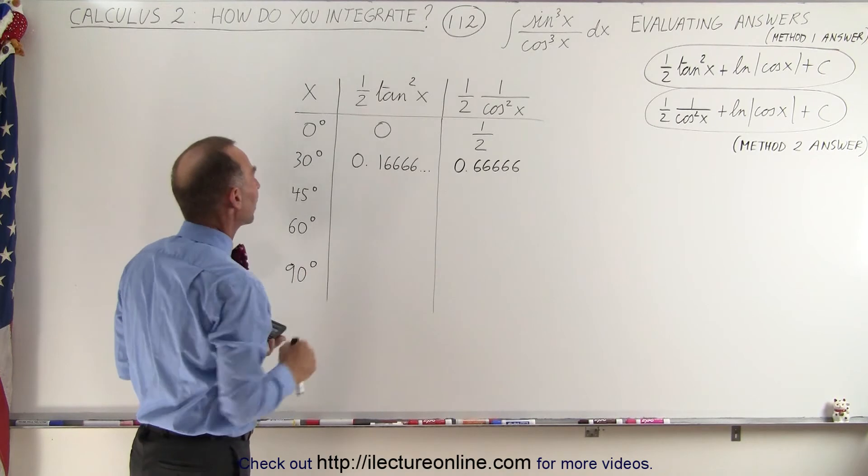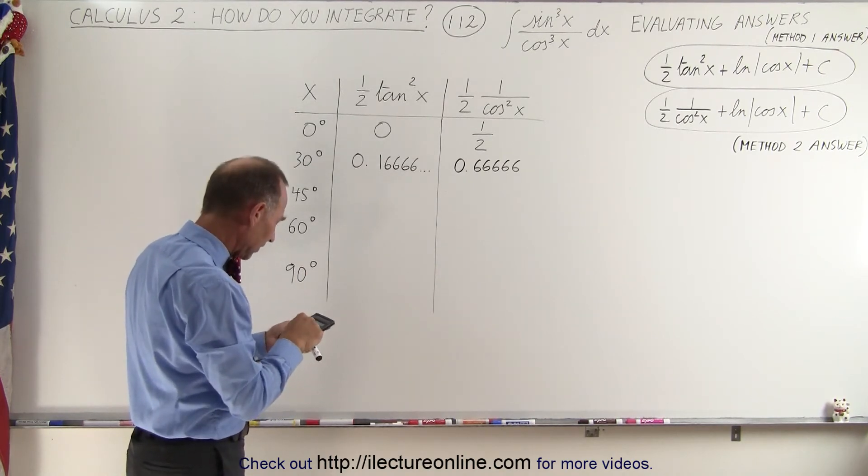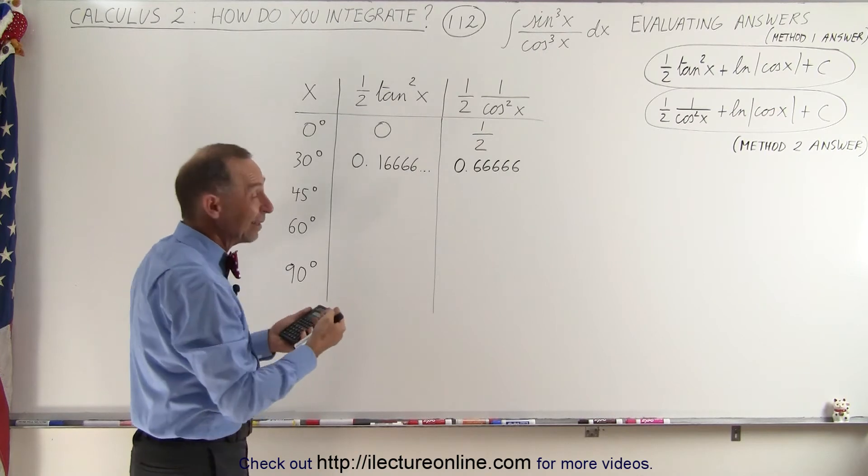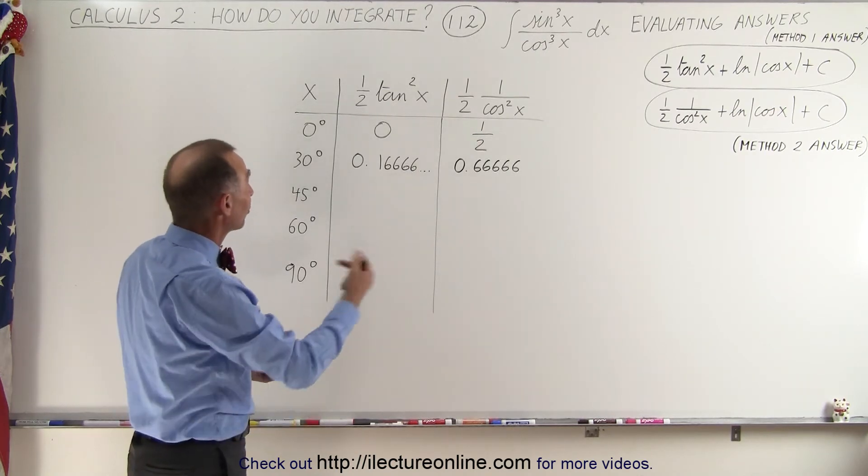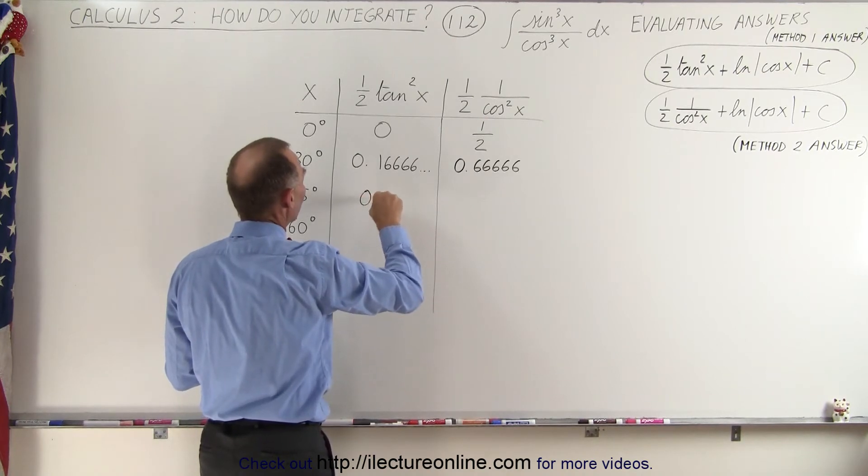So let's go ahead and plug in some more numbers. We take 45 degrees, take the tangent of that, we square it. Well the tangent of 45 of course is 1, and we square it up, we get 1 times one half, so we get 0.5.